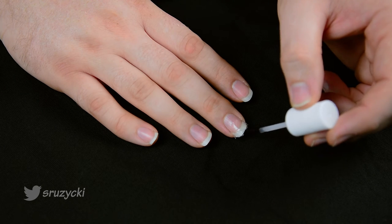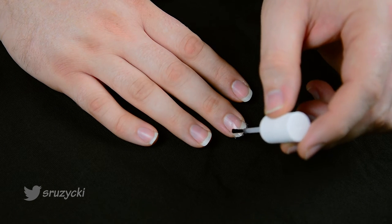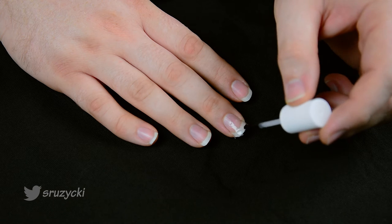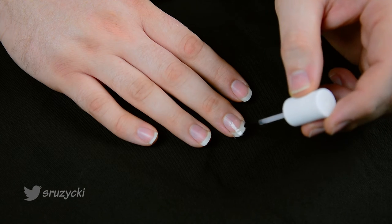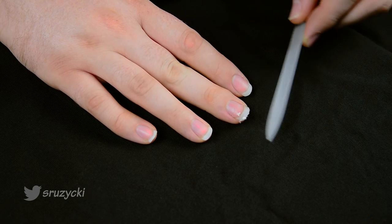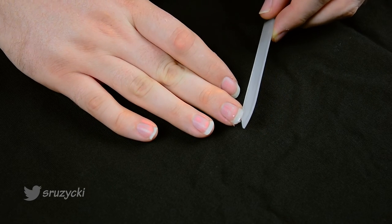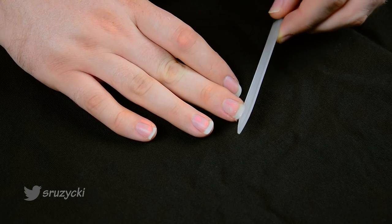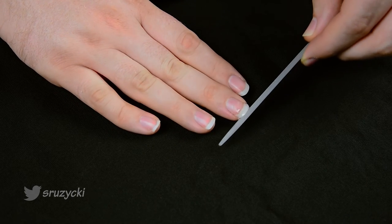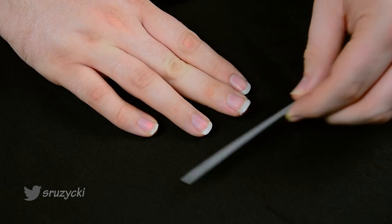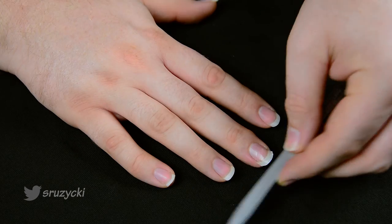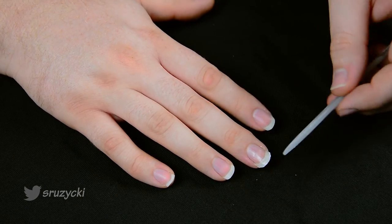Once completely dry, add another layer of glue. Once the glue is completely dry, file off the excess silk. I personally like to use glass files and they don't damage the nail. File off a small layer of glue just to get it smooth.